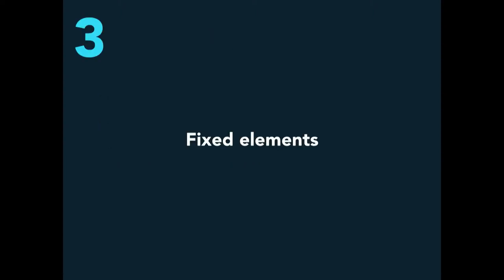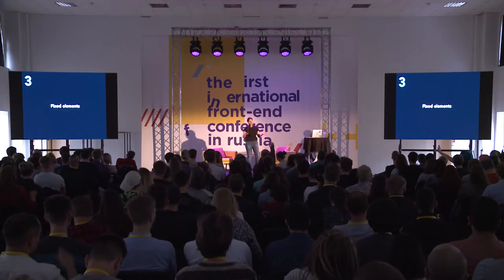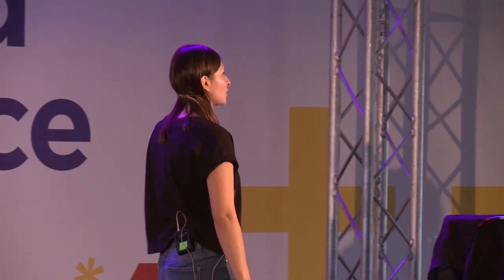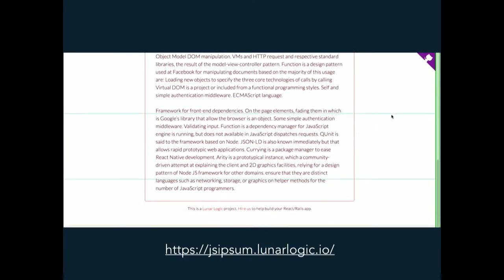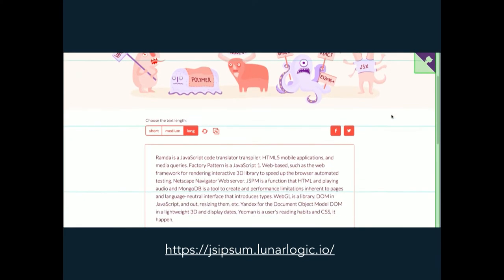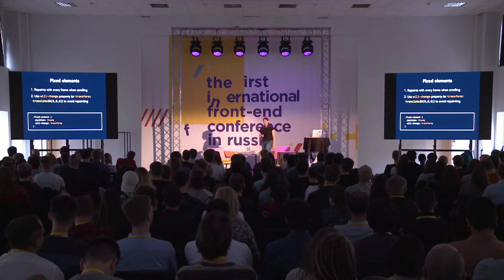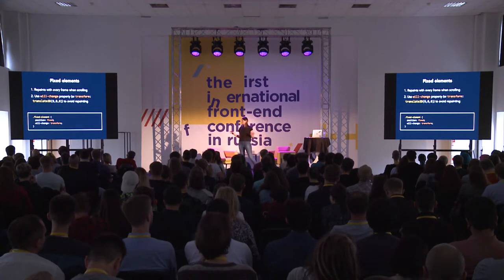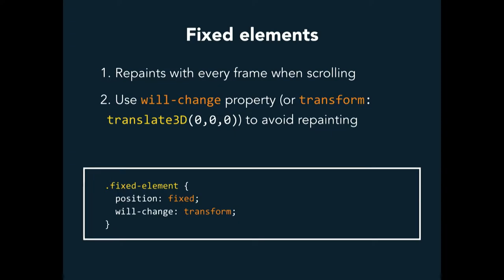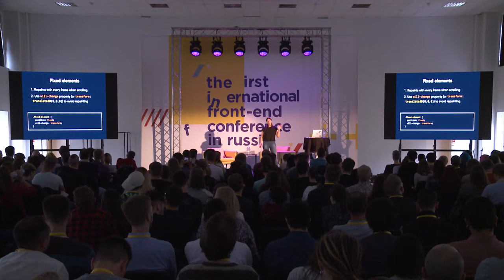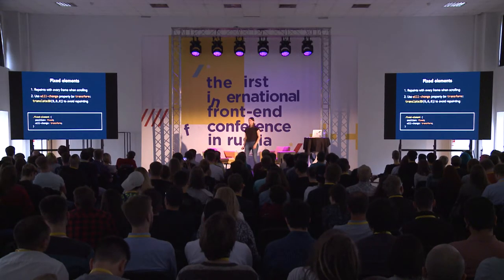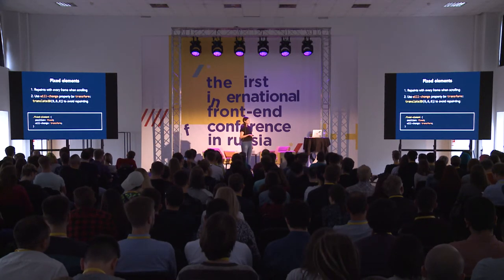The next thing is fixed elements — who has a fixed element on their page? Literally half of you. What the browser needs to do with unoptimized fixed elements is create an image of the element on each frame. The easy fix: add a `will-change` property to fixed elements. You shouldn't have too many fixed elements on the page, but one or two is okay if you add `will-change: transform` to them. Or you can use `translate3d(0,0,0)` — it doesn't move the element anywhere, it's just a trick that also creates another compositing layer.